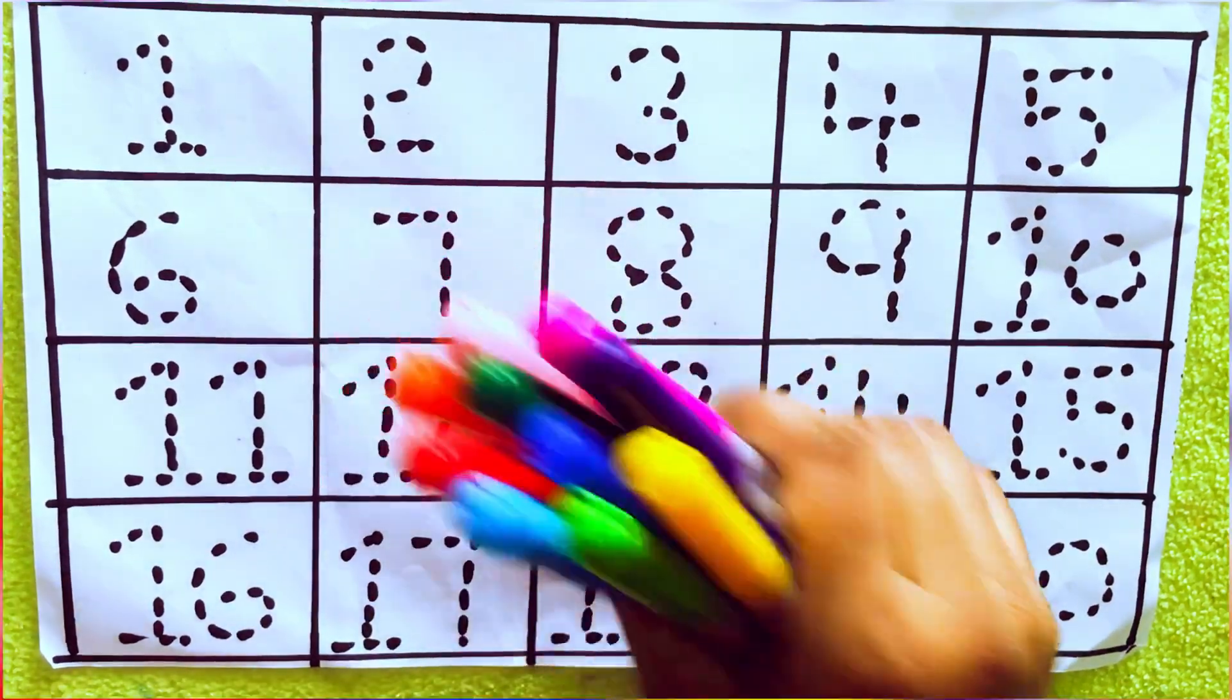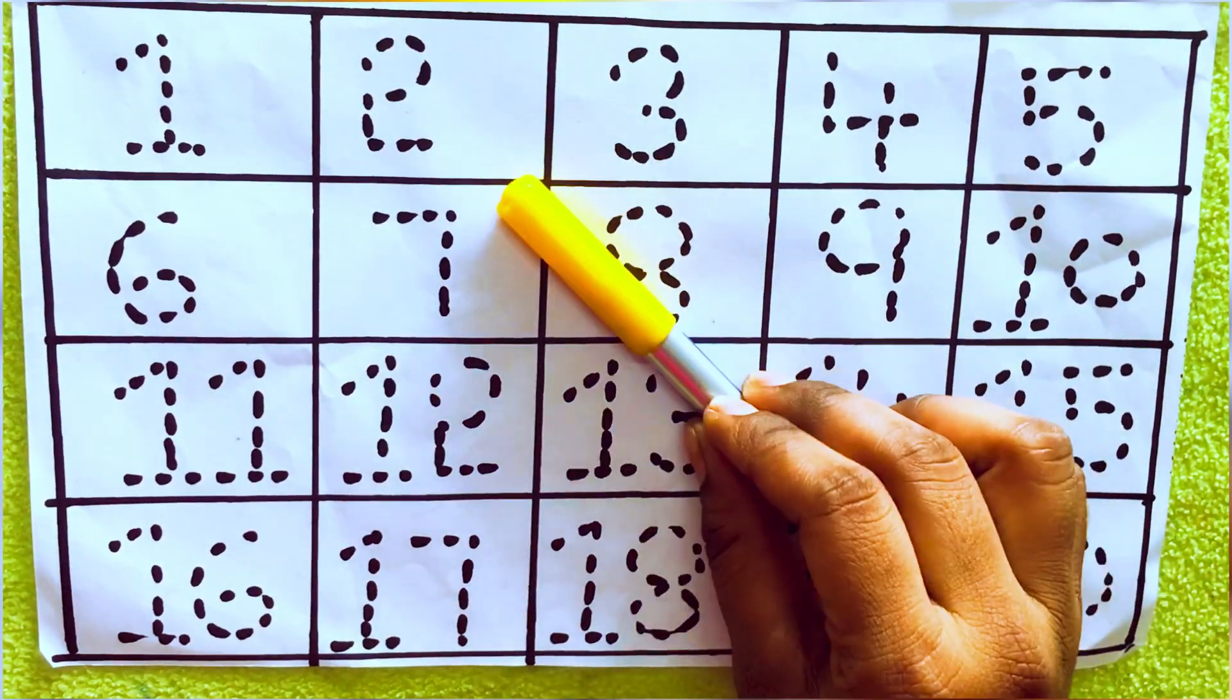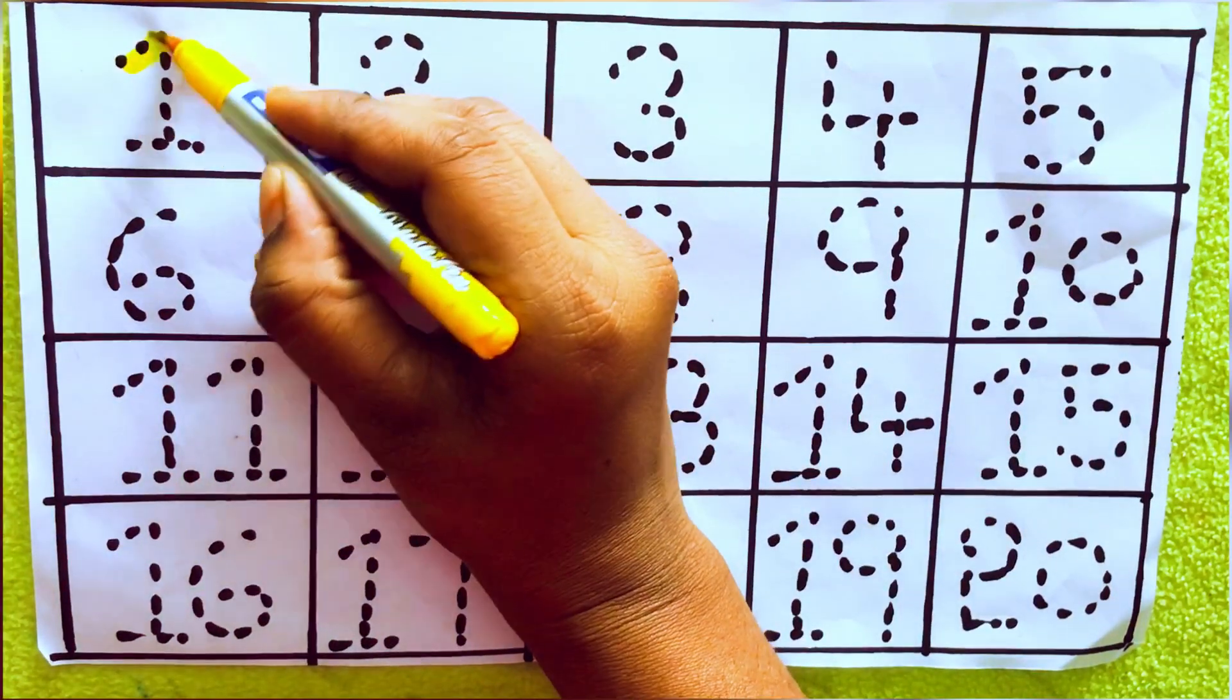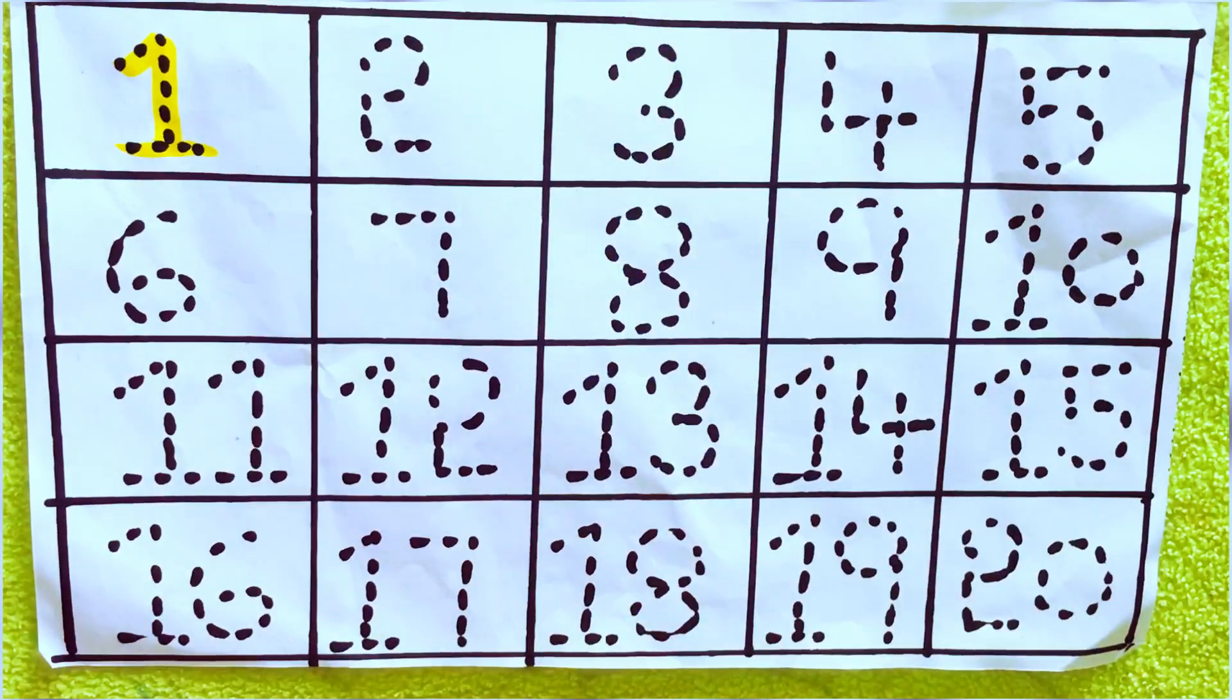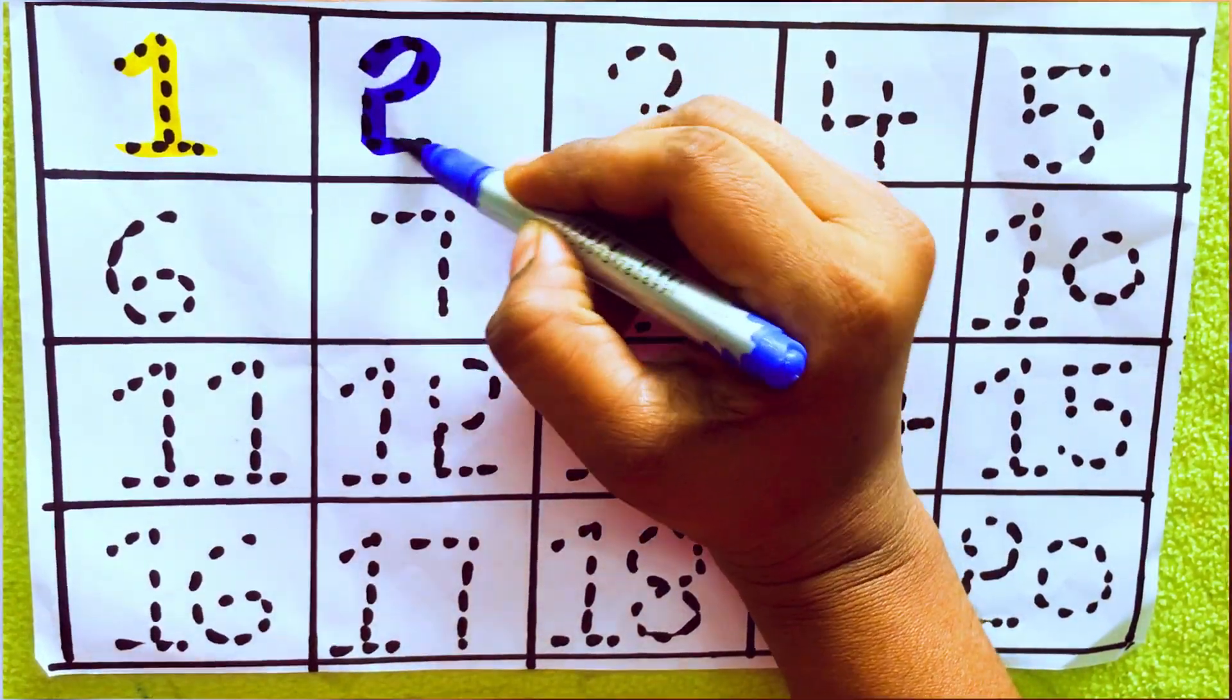Let's draw numbers. Yellow color, 1, O-N-E-1. Blue color, 2, D-W-O-2.